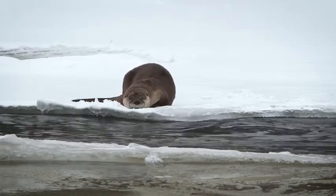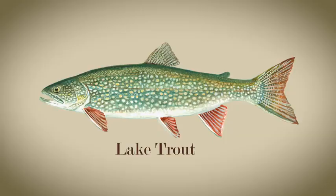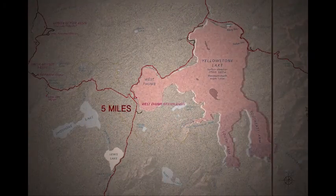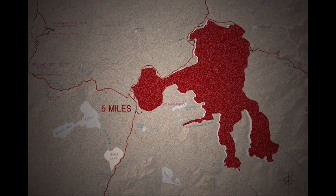The native cutthroat trout of Yellowstone National Park are being threatened by non-native introduced fishes that were brought into the park intentionally in the late 1800s and early 1900s. Lake trout were introduced to what were fishless Lewis and Shoshone lakes in the upper Snake River, but somehow they made their way to Yellowstone Lake. The non-native lake trout are a highly predatory species and caused a severe decline in the cutthroat trout.